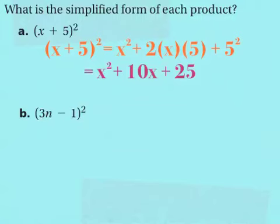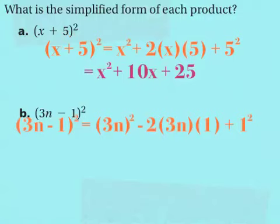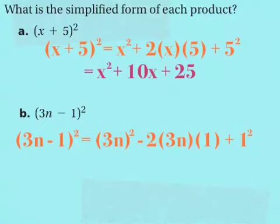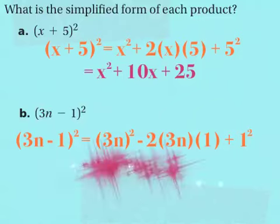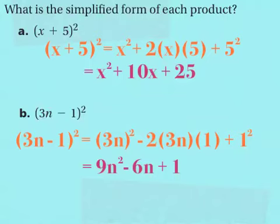In the next example, we have 3n minus 1 squared. Using your special case, 3n minus 1 squared is going to be the same as 3n squared minus 2 times 3n times 1, plus 1 squared. 3n squared is 9n squared — remember, you have to square both 3 and n. Minus 2 times 3 is 6, so minus 6n, and then plus 1.